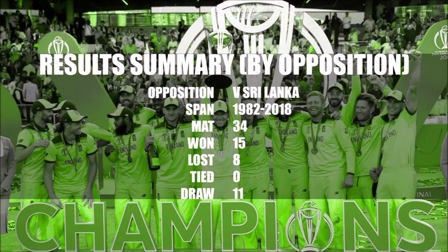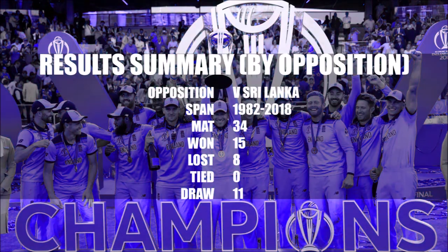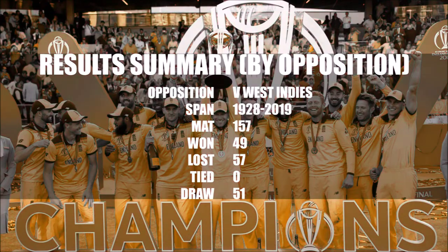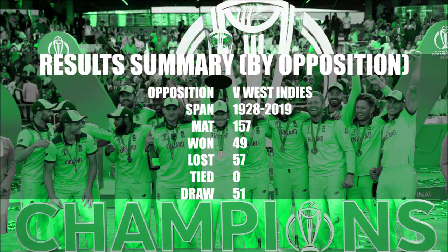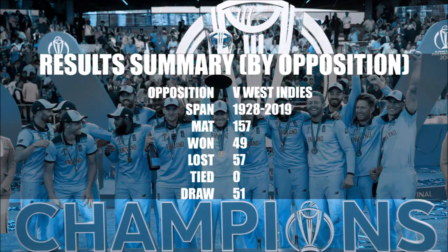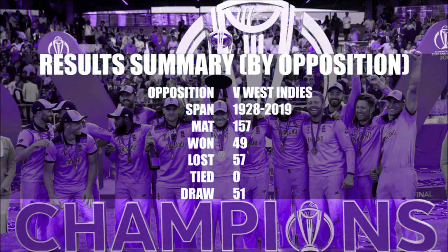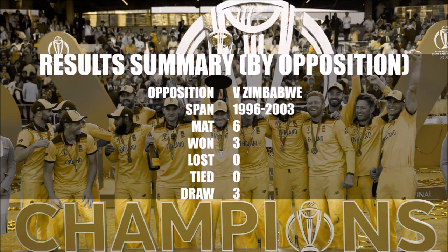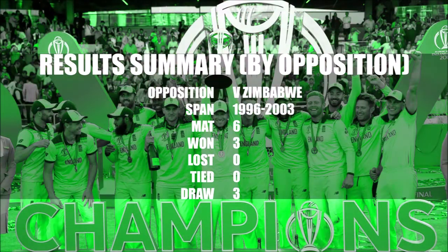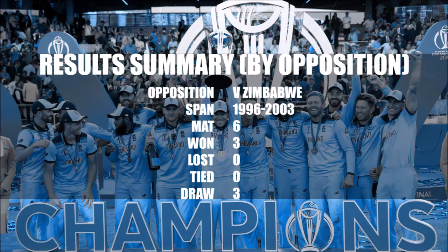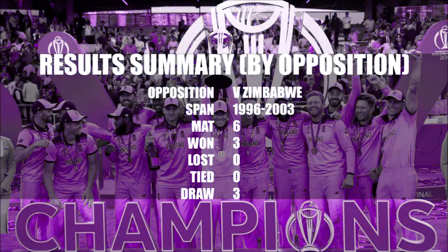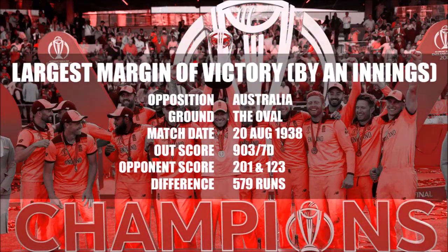Results summary against West Indies: Span 1928 to 2020, matches played 157, won 49, lost 57, drawn 51. Results summary against Zimbabwe: Span 1996 to 2020, matches played 6, won 3, lost 0, drawn 3.